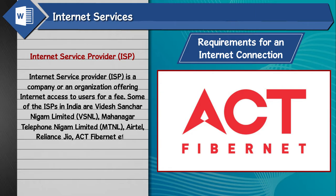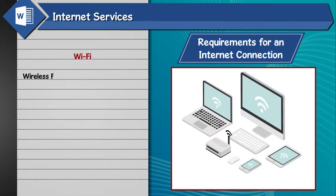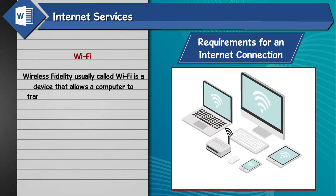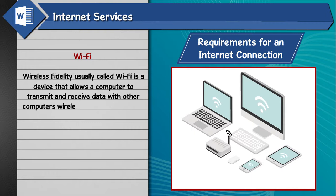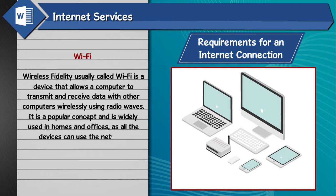Act Fibernet, etc. Wi-Fi, or Wireless Fidelity, usually called Wi-Fi, is a device that allows a computer to transmit and receive data with other computers wirelessly using radio waves. It is a popular concept and is widely used in homes and offices, as all the devices can use the network.